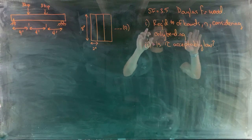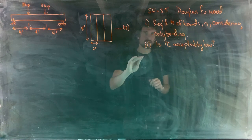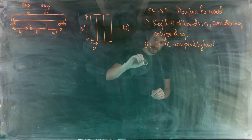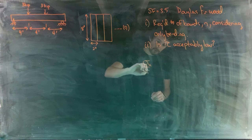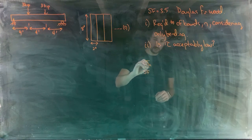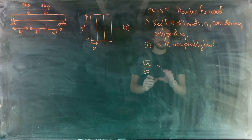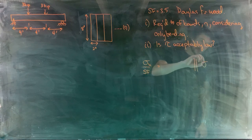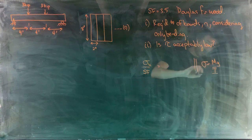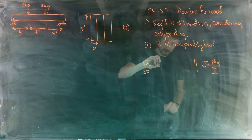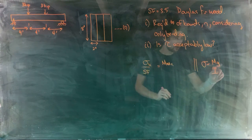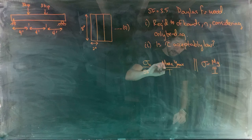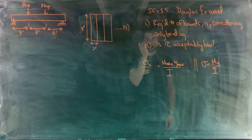For part one, we equate the ultimate strength of the wood divided by our safety factor — the allowable stress — to the maximum bending stress within the beam. Using sigma = My/I, we get the maximum bending stress when the internal moment is maximum and variable y is maximized.